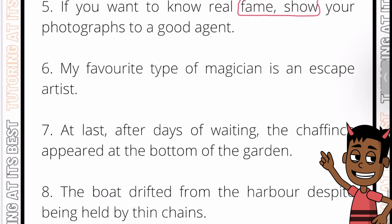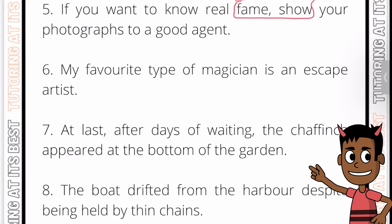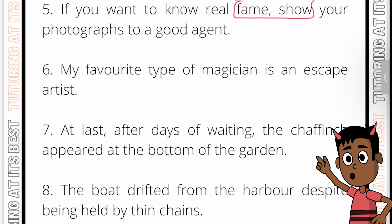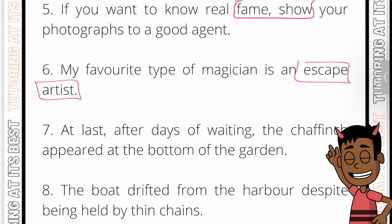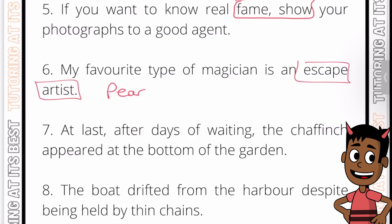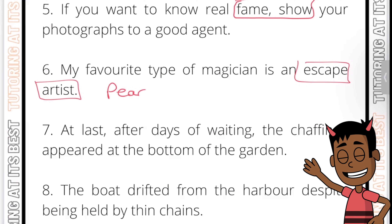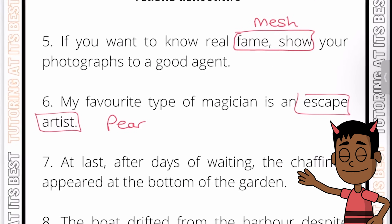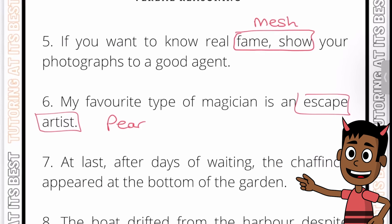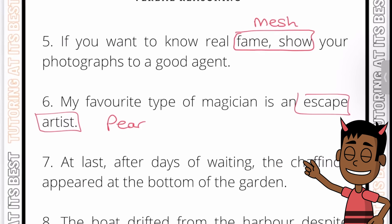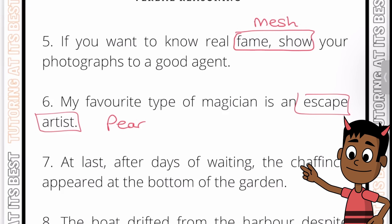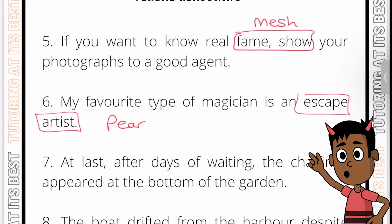Question 6: 'My favorite type of magician is an escape artist.' For this one we go for 'escape' and 'artist,' because 'pear' is hidden between them. Don't forget — the most famous escape artist was Harry Houdini, known as 'The Great Houdini.' As we're finding these words, note them down as part of your vocabulary, search them up, and write sentences with the words — that way you'll learn the spellings and remember the meanings.